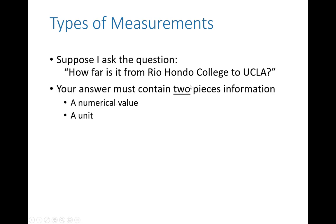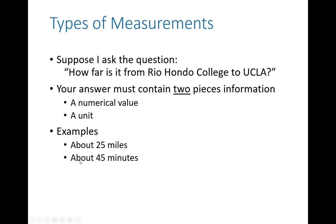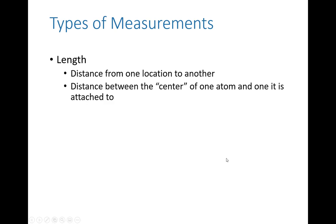It's not possible to just say 'it's 17' because no one would have any idea what you're talking about. Your answer must have two very important pieces of information: a numerical value and a unit. For example: 25 miles, 45 minutes. We'll start by looking at measurements of length, which are probably the most familiar — simply the distance from one location to another. It could be very small, like the distance from the center of an atom to another atom in a bond.